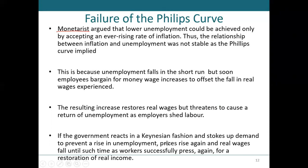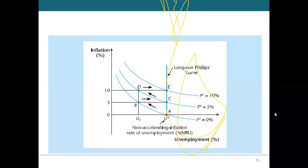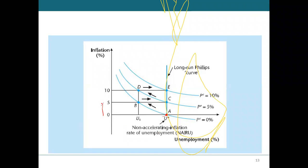In the long run, the traditional Phillips curve will not work. Let's look at it: assume this is the initial level of unemployment and government uses expansionary monetary and fiscal policy so that aggregate demand rises over aggregate supply and prices rise. Inflation increases from 0% to 5%, and unemployment falls from U-star to U-1.